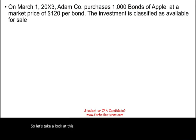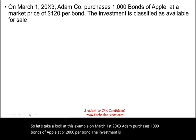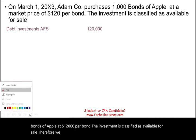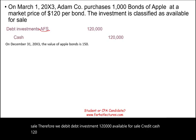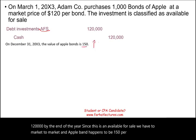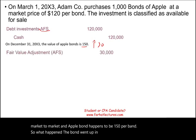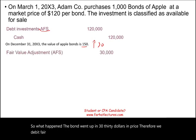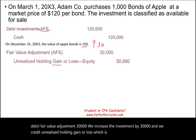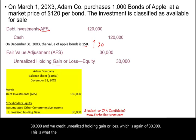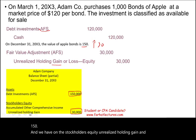On March 1st, 20X3, Adam purchases 1,000 bonds of Apple at $120 per bond. The investment is classified as available for sale. Therefore, we debit debt investment $120,000 and credit cash $120,000. By end of year, since this is available for sale, we mark to market. The Apple bond is now worth $150 per bond — so the bond went up $30,000. We debit fair value adjustment $30,000 and credit unrealized holding gain $30,000. The balance sheet shows net investment of $150,000 and unrealized holding gain in other comprehensive income of $30,000.